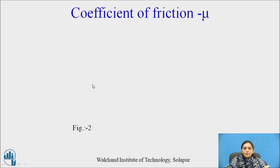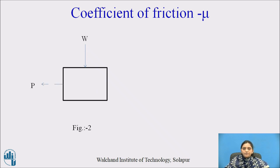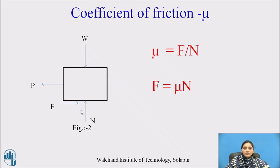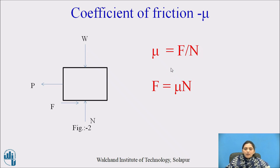We will now look at the coefficient of friction, mu. Consider a body with self-weight W acting vertically downward, and pulling force P trying to pull the block. The surface offers a normal reaction N in the vertical direction, and the frictional force F acts opposite to the direction of motion. F and N bear a constant ratio called the coefficient of friction: mu = F/N, or equivalently F = mu × N.